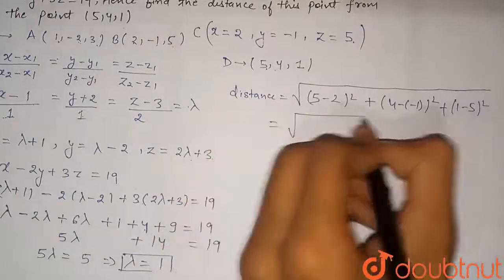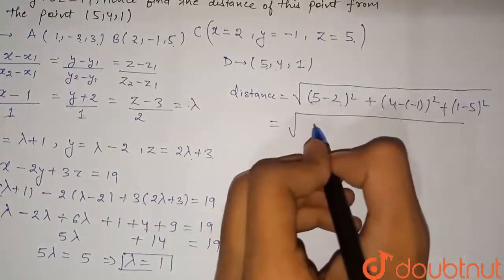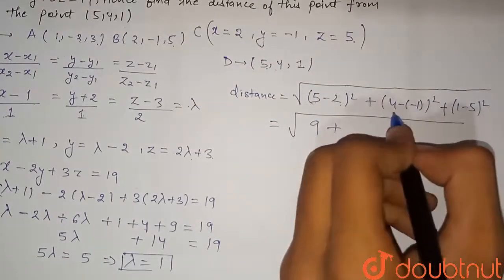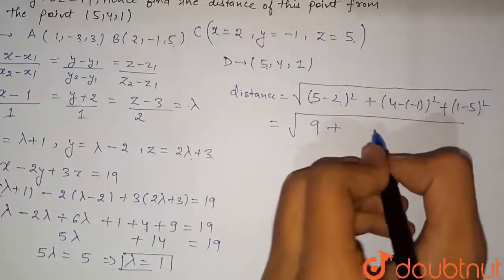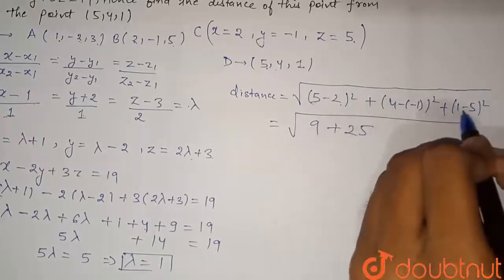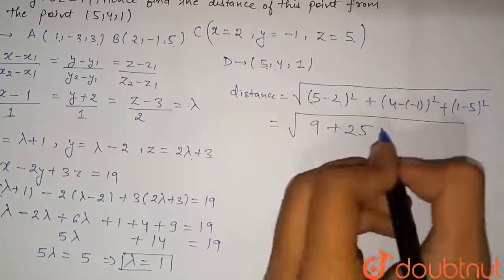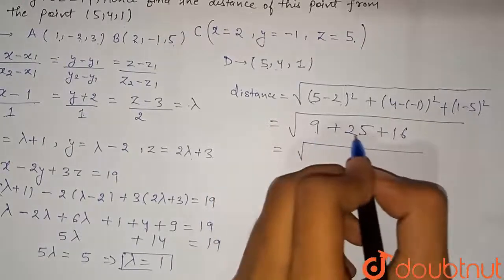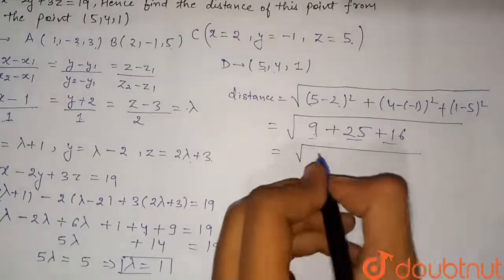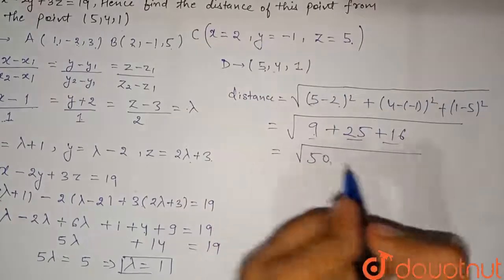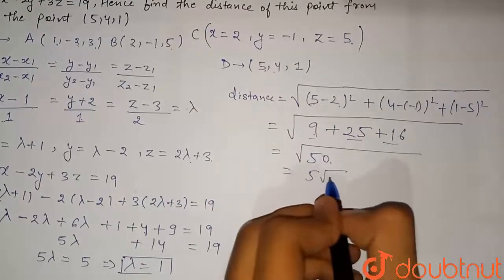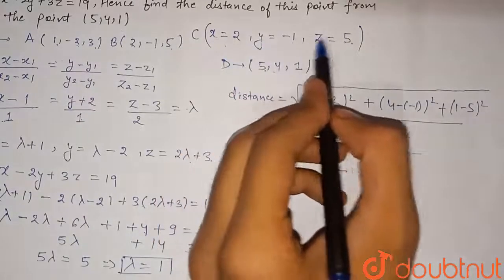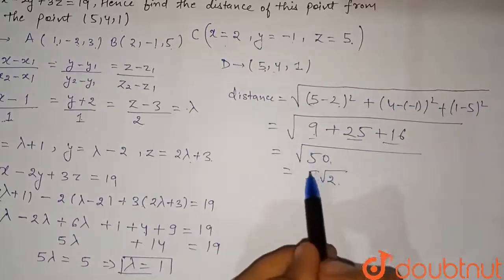Computing: (5 - 2)² = 9, (4 - (-1))² = 5² = 25, and (1 - 5)² = (-4)² = 16. So distance = √(9 + 25 + 16) = √50 = 5√2. The coordinate of the required point is (2, -1, 5) and the distance is 5√2 units.